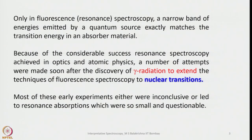Only in fluorescence resonance spectroscopy does a narrow band of energies emitted by a quantum source exactly match the transition energy in an absorber material. Because of the considerable success resonance spectroscopy achieved in optics and atomic physics, a number of attempts were made by scientists soon after the discovery of gamma radiation to extend its utility in fluorescence spectroscopy to nuclear transitions.